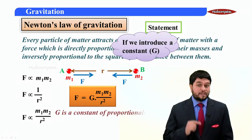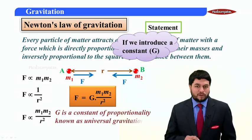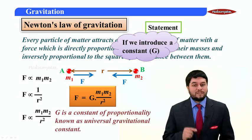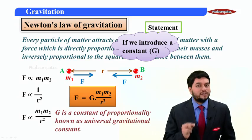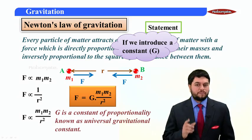Now students note, this capital G is a very special constant. In this case, this constant of proportionality is called the universal gravitation constant. Remember it.